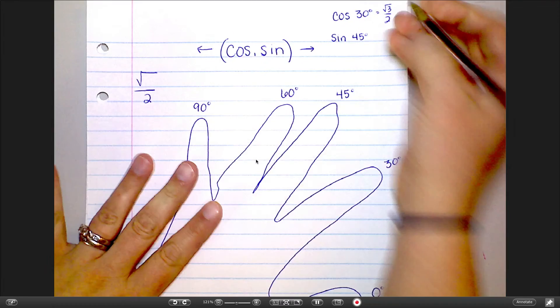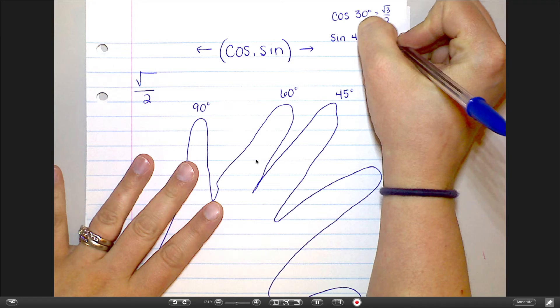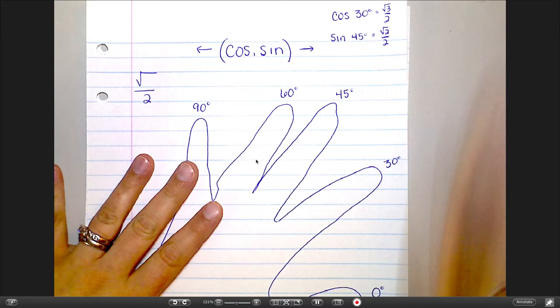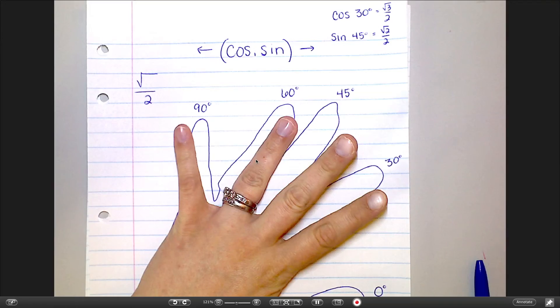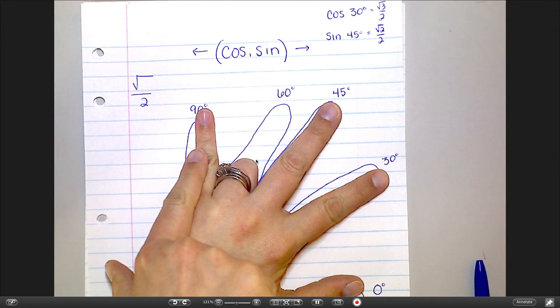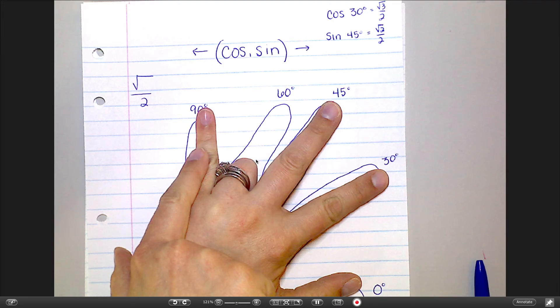So, you can use that to find all of those exact values that your quiz is on tomorrow. When I say, you know, cosine 60, you would put this finger down, cosine's on the left, so this would be 1 over 2.